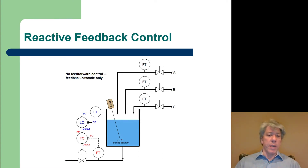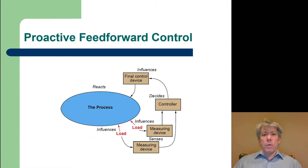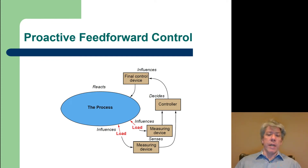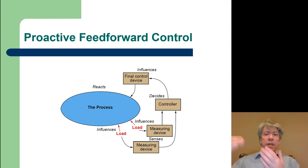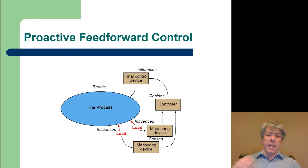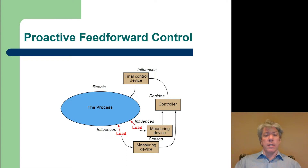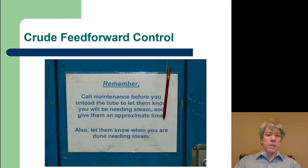So the idea with feed-forward control is to be proactive instead of reactive. If there's a way we can measure things that will influence the process, maybe we could feed that information forward into the controller and allow the controller to manipulate the control variable based on these things that largely affect the process.